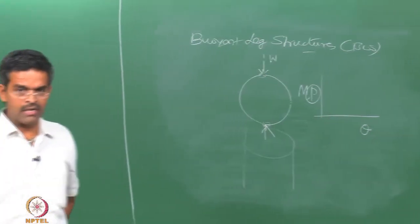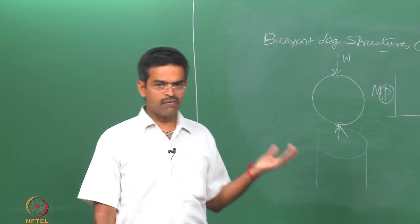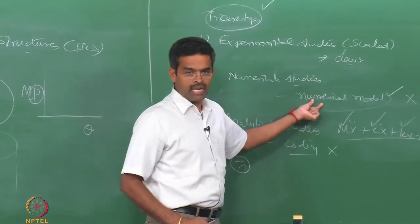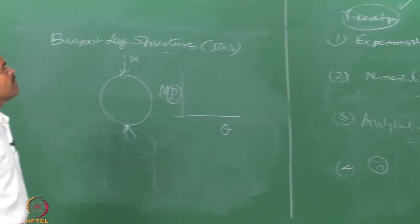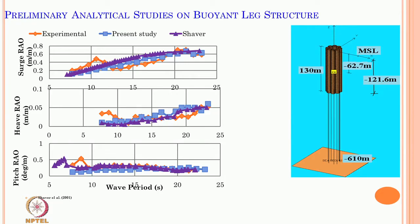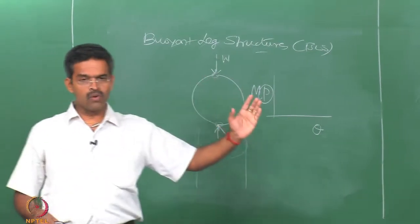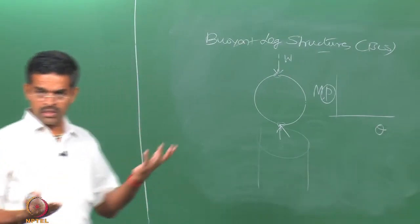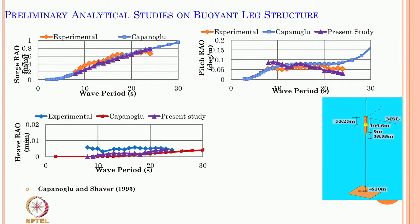So far we had been solving equations of motion using Newmark's beta technique for MLATs and TLPs. Now we are moving to using an existing numerical software — not a standard analytical procedure — where the response is obtained directly as a response amplitude operator. In this case ANSYS ACWA was used. The experimental results, except for a few variations, merge completely qualitatively and quantitatively with the present study and Shaver's results, validated for different degrees of freedom. However, for BLS there is no complication of modeling a ball joint here, since Kappanoglu and Shaver et al. were only working on a single buoyant leg structure.